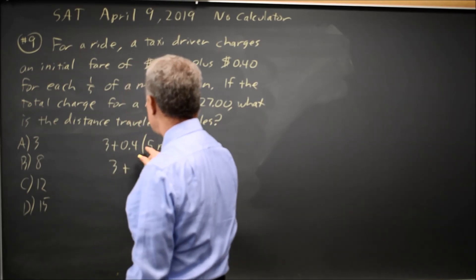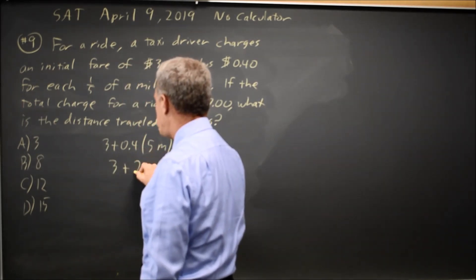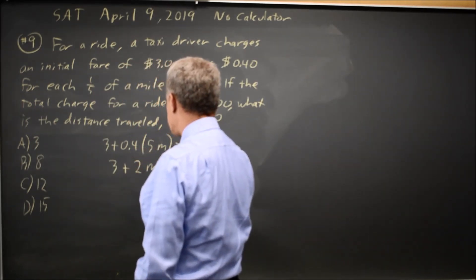That simplifies to 3 plus 0.4 times 5 is 2m equals 27.